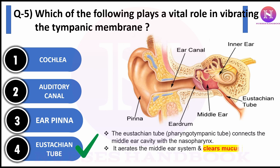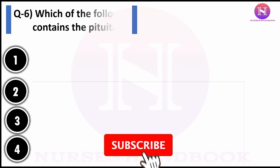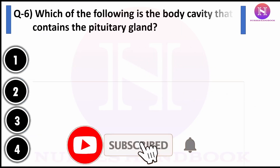The Eustachian tube, also known as the pharyngotympanic tube, connects the middle ear cavity with the nasopharynx. It aerates the middle ear system, maintaining pressure and clearing mucus from the middle ear into the nasopharynx. When the pressure is balanced, the eardrum vibrates freely.